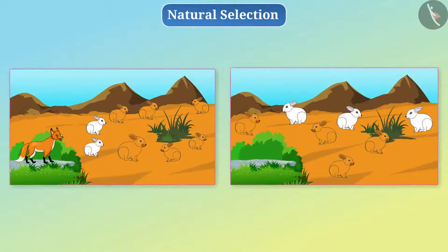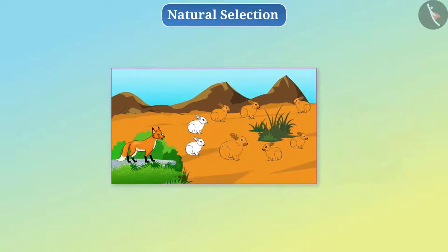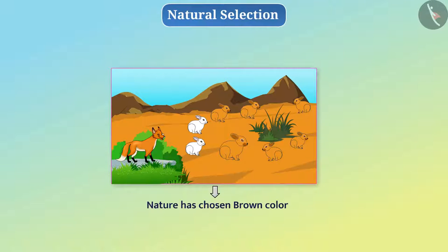This change has occurred with the arrival of the fox on the hill. Had the fox not arrived on the hill, the situation would be different. That is, in this situation, nature has chosen brown colour. Similarly, nature selects those organisms for survival and for reproduction which have the necessary adaptations to cope with the changing environment. That is what we call natural selection.